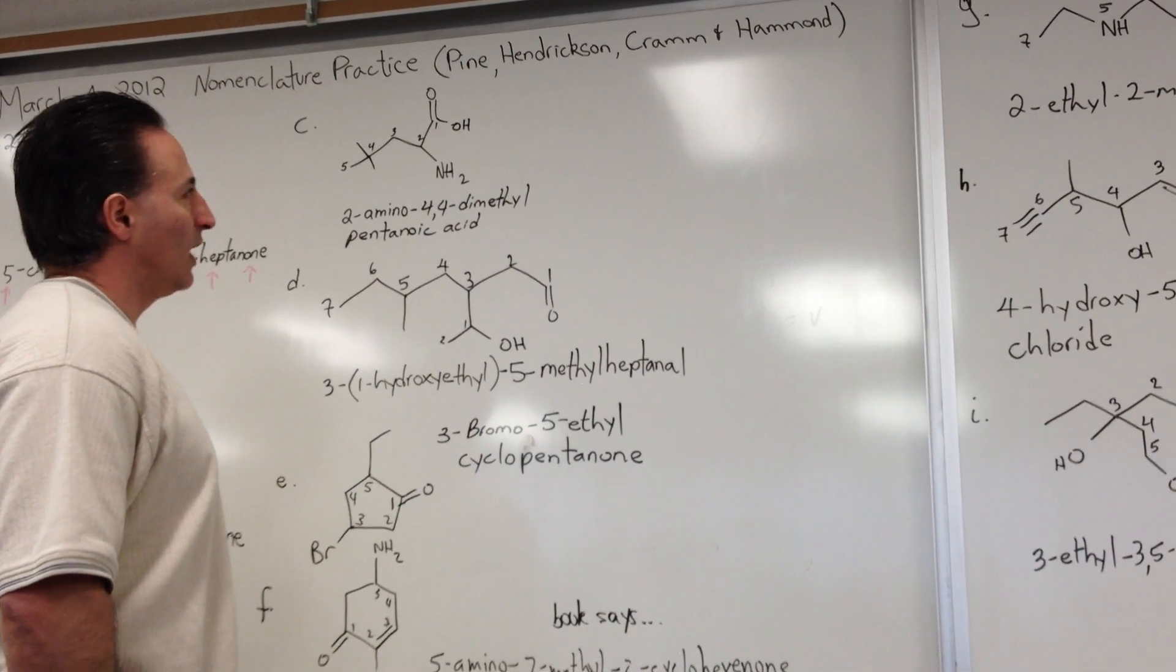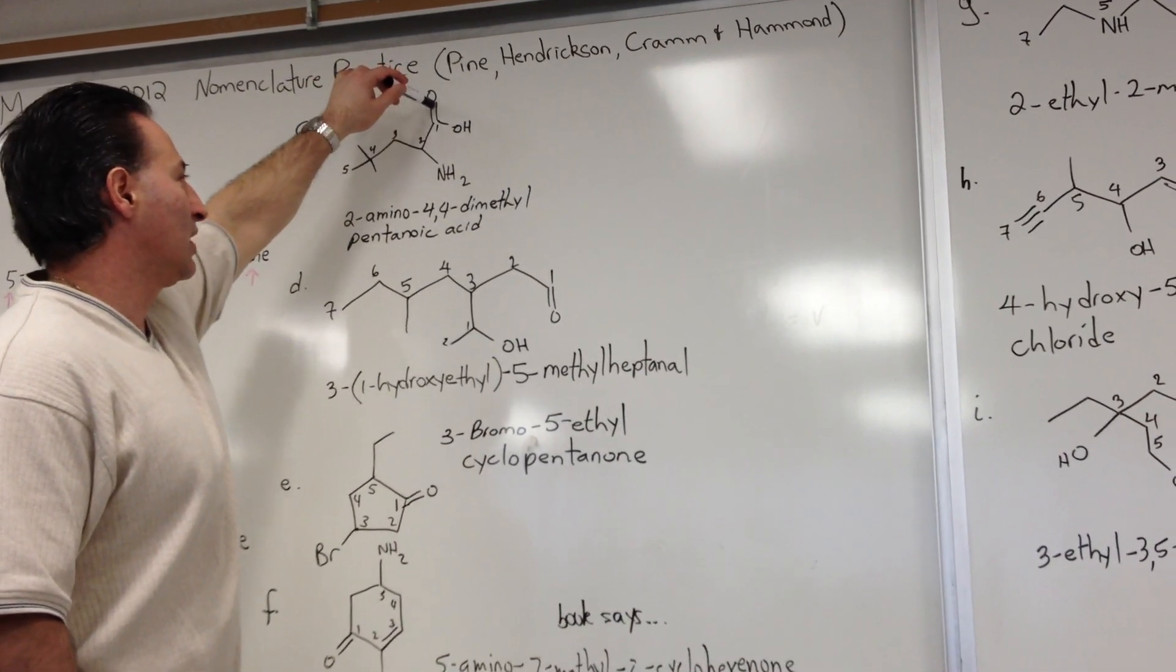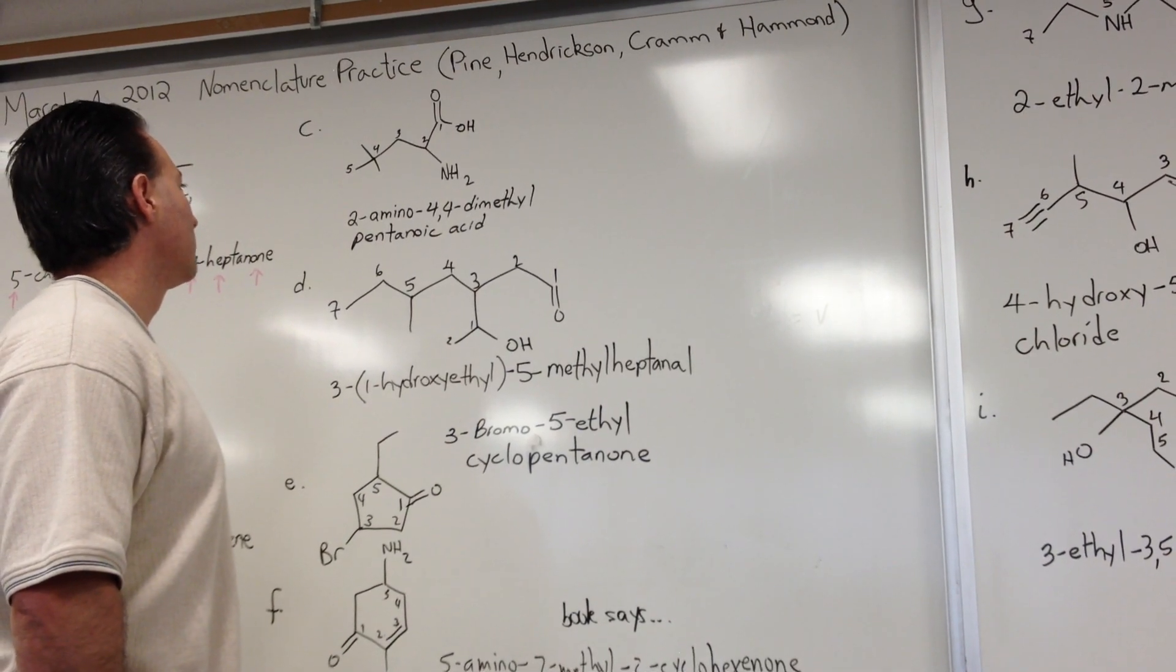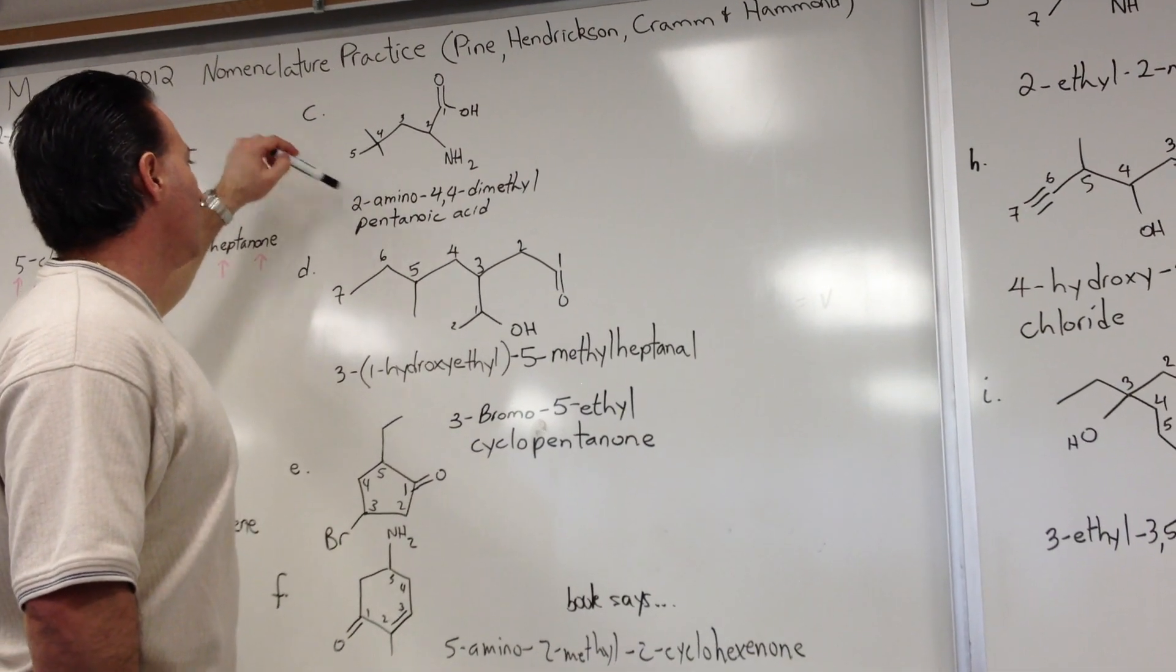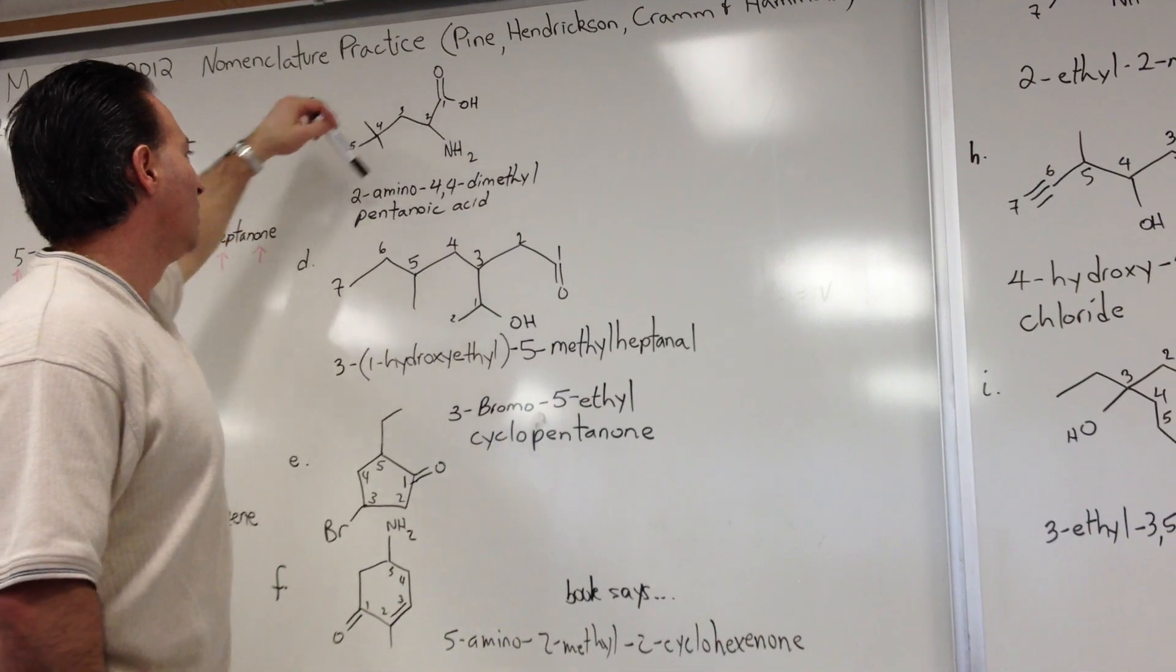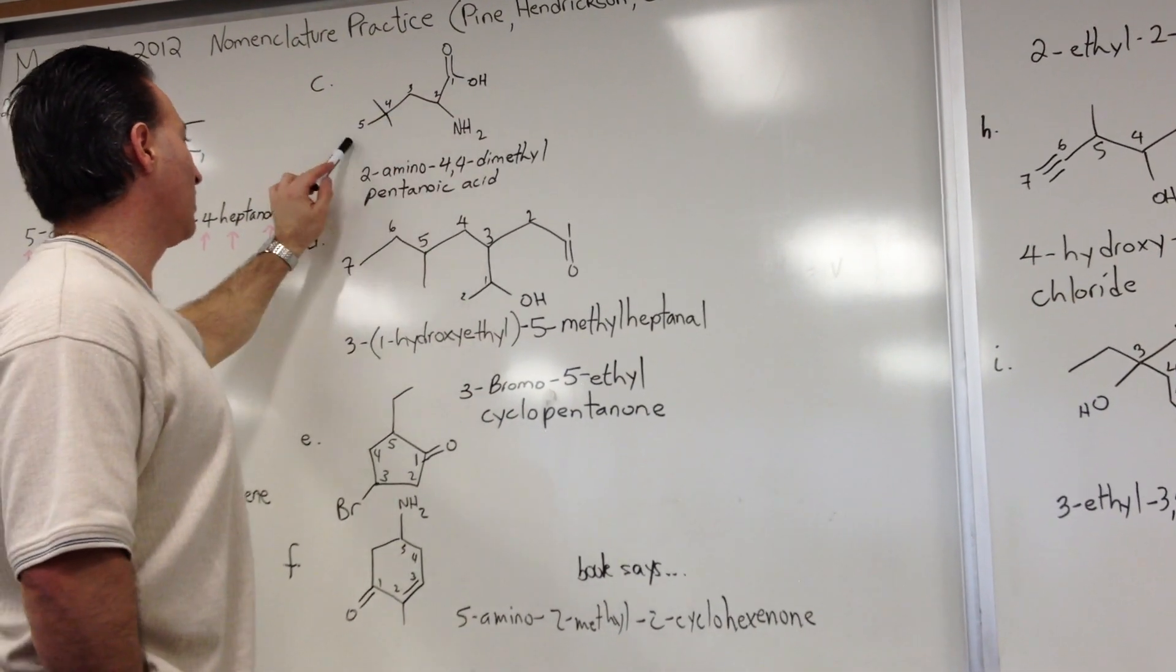C is an amino acid, if you recognize the structure. It has an R group, there's a carboxylic acid moiety and the amino group. So we could call this, the longest chain being 5 carbons long, 2-amino-4,4-dimethyl-pentanoic, because it's 5 long, acid.